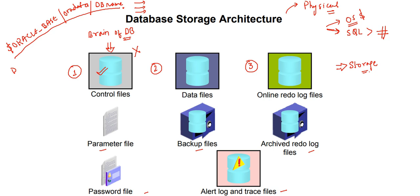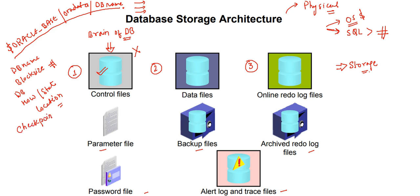The control file stores approximately all database information: the database name, block size (default 8KB, or whatever custom size is set), the DB unique name, how many data files are present, their state and locations, whether instance recovery is required, and checkpoint information. Control file is a very important file and it is physical in nature.